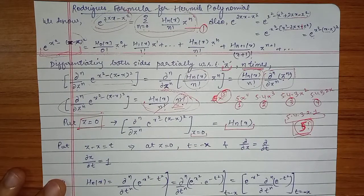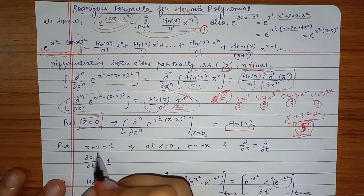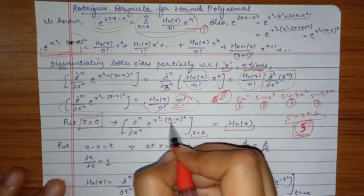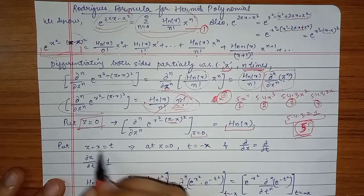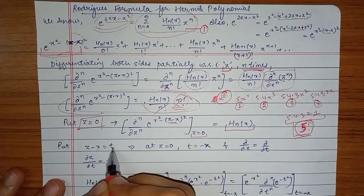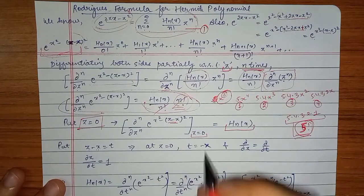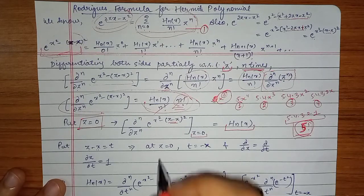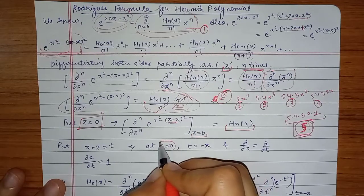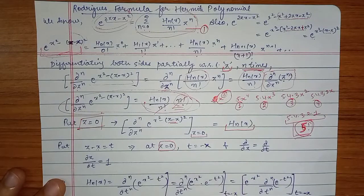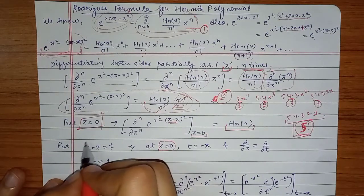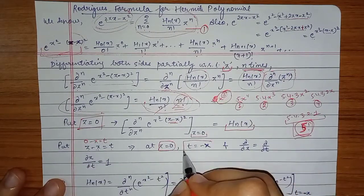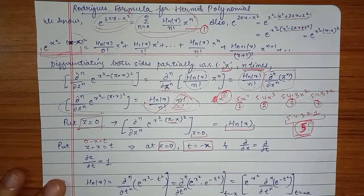Now consider the substitution z minus x equal to t. Because we have set z equal to 0, when z=0 we get t = 0 minus x, so t is equal to minus x.